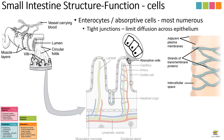Enterocytes have a few important specializations. First are tight junctions — specialized junctions connecting cells that act like zippers pushing the plasma membranes of adjacent cells together, leaving no space in between and preventing things from moving between cells into the body. These are really important in the intestines because they allow cells to regulate what gets into the body — nothing slips in between the walls. The tight junctions create one kind of continuous plasma membrane along the lining of the intestine, so the cells themselves are controlling what's coming into the body.